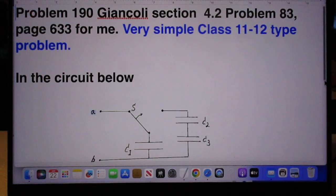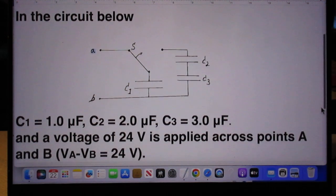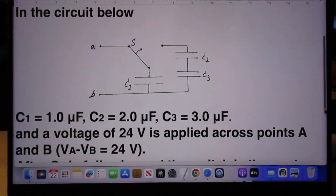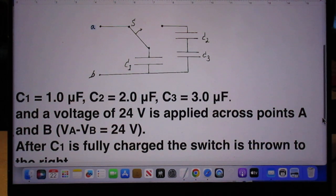In the circuit below, C1 is 1.0 microfarad, C2 is 2.0 microfarad, and C3 is 3.0 microfarad.